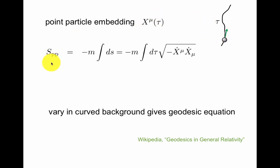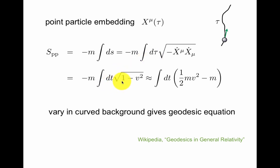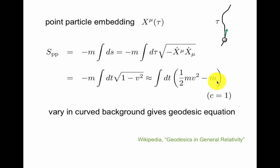The point particle action in worldline formalism is given by minus the mass of the particle times the integral of the spacetime interval. This should be fairly familiar to you in that this interval is expressible as d tau times the square root of this contraction. You can exchange this tau here, which differs from this tau by a Lorentz factor, and you get this kind of expression. This is the first exercise in Polchinski chapter 1. You can expand this for small velocities and you recognize the usual kinetic term for a point particle minus the energy mc squared.